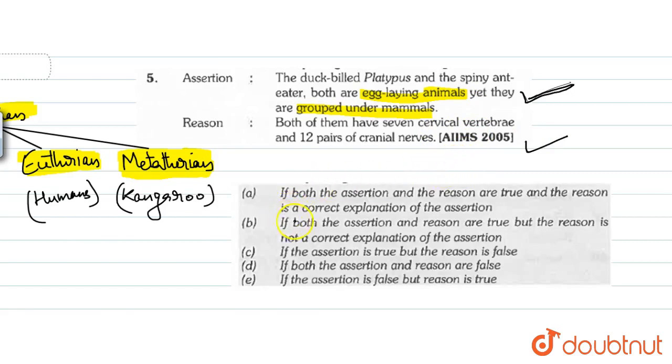That's why we will see this option in which we will say that if both the assertion and reason are true, but the reason is not the correct explanation of the assertion. That's why our right answer will be answer option B.